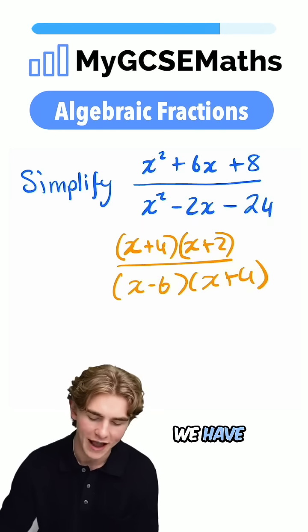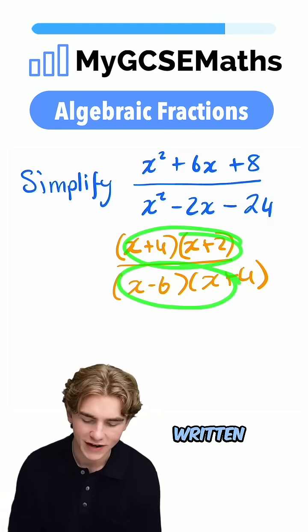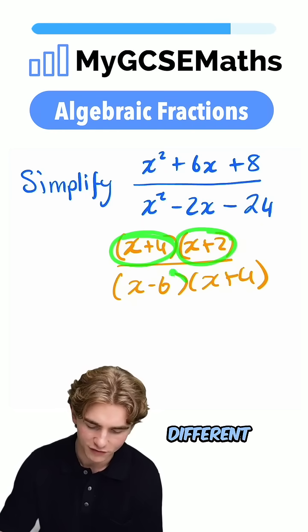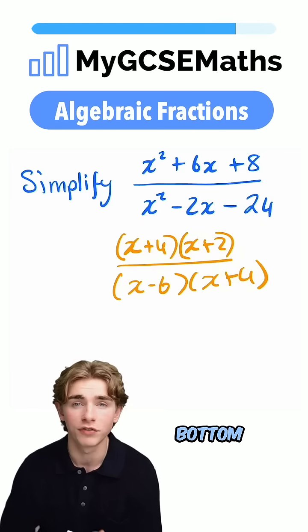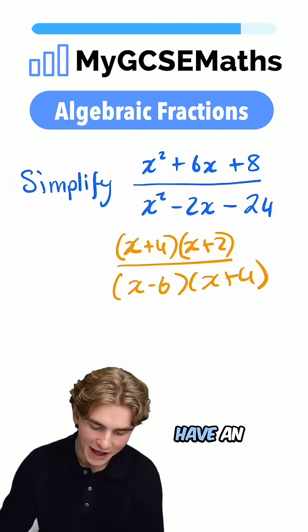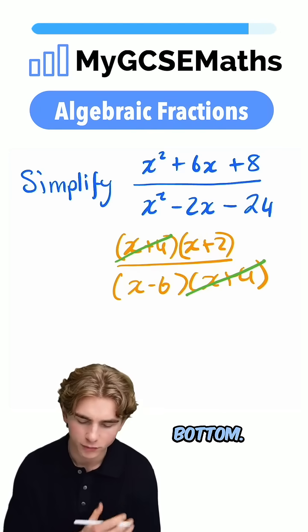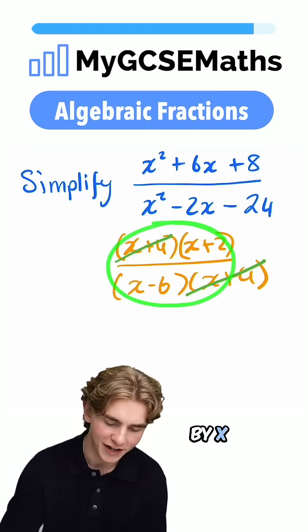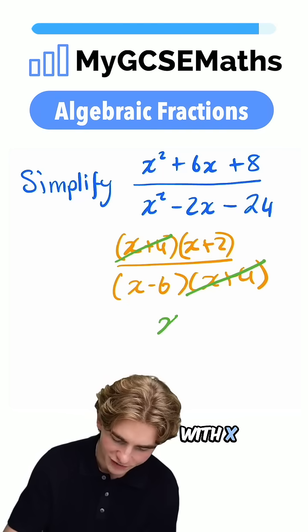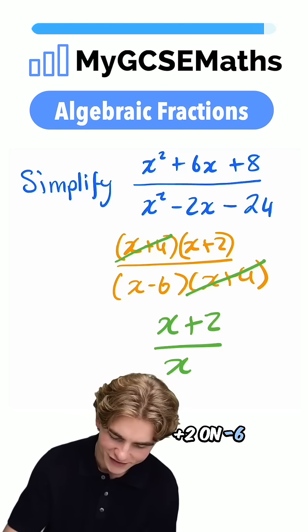Now, what can we do? Now that we have the top and the bottom both written as the product of a couple of different numbers, we can divide the top and bottom by any common factors. Here we have an x plus 4 on the top and an x plus 4 also on the bottom, so we can divide top and bottom by x plus 4. We're going to be left with x plus 2 on the top and x minus 6 on the bottom.